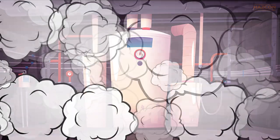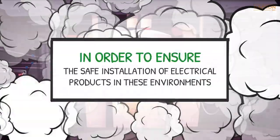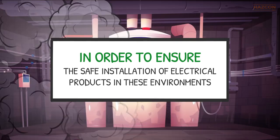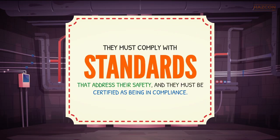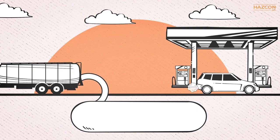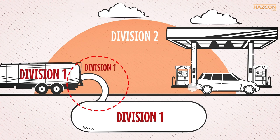Some locations are deemed hazardous due to the presence of explosive atmospheres. In order to ensure the safe installation of electrical products in these environments, they must comply with standards that address their safety and be certified as being in compliance. The class division system is used in North America to distinguish hazardous areas and the degree of hazard present.